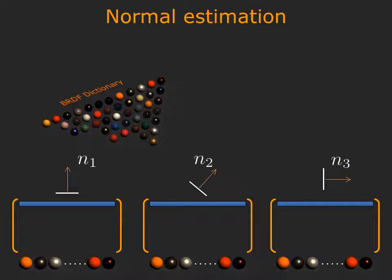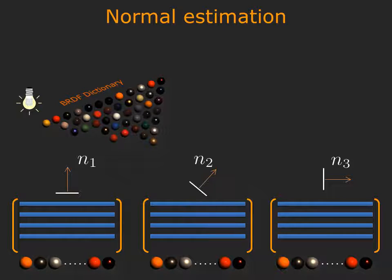To obtain the normal map associated with the scene, we sample the space of normals densely. For each candidate normal and each material in the dictionary, we create a matrix of observed intensities as the lighting in the scene is varied.